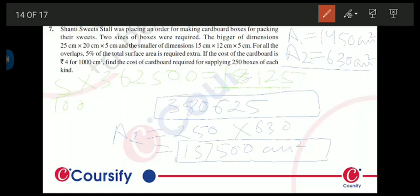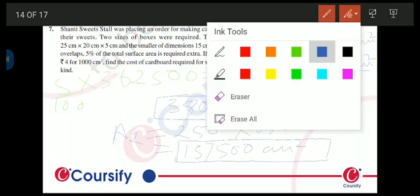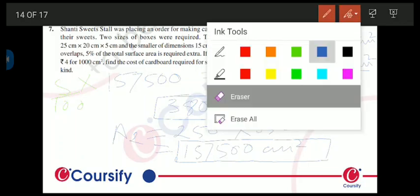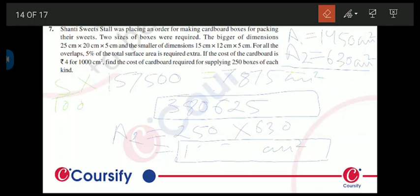And जब similarly हम small boxes का 5% extra लेकर उसके अंदर add करेंगे, तो हमारी value आएगी 7,875.